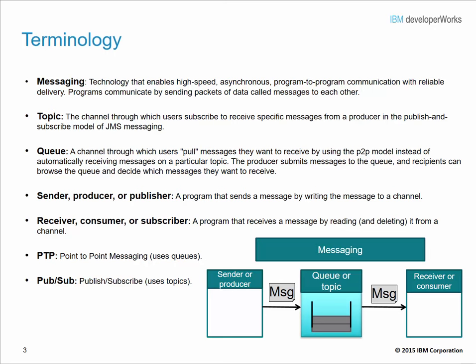There are two basic messaging models. One is called publish-subscribe, and another is called point-to-point. The publish-subscribe model utilizes a channel called a topic. Producers write messages to a topic, and then receivers, consumers, or subscribers of that topic receive those messages. Publish-subscribe is a very efficient way to send a single message to multiple recipients at the same time.